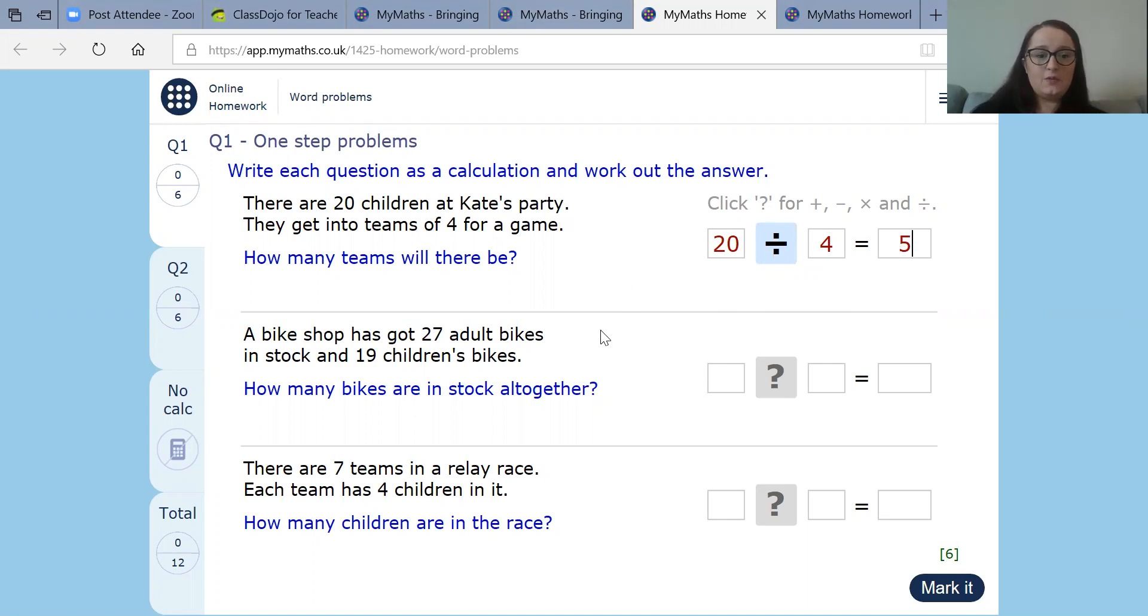Let's do another one. So a bike shop has got 27 adult bikes. So we're at 27 there in stock, sorry, and 19 children's bikes. So we know that that's the next number. How many bikes are in stock altogether? Now, we're adding two numbers here together. So we're going to be using the addition sign. So 27 add 19. Now we know that seven add nine is 16. And we know that 20 add 10 is 30. So 16 add 30 is 46.